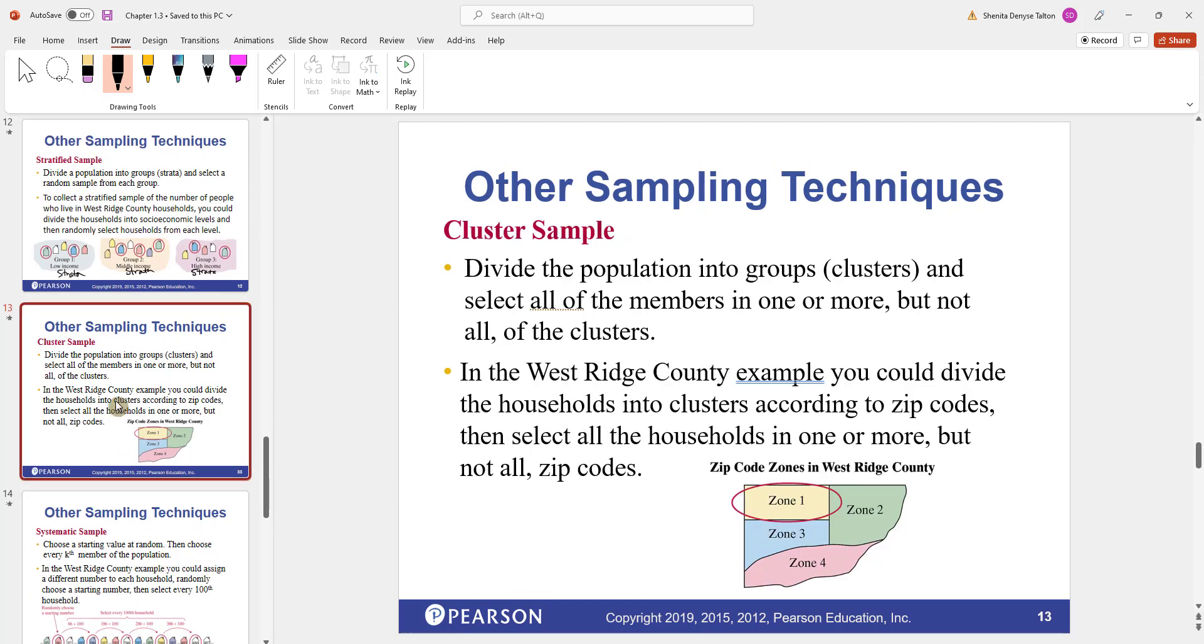A lot of students get stratified sampling confused with cluster sampling. With cluster sampling, you divide the population into groups or clusters. And you select all the members in one or more, but not all of the clusters. Going back to our West Ridge County example, you can divide the households into clusters according to zip codes. You know like a state, they all have different zip codes. And then you select all of the households within that zip code. Here's zone one. These all have the same zip codes. Same thing for zone two, zone three, and zone four. So I can randomly pick a zip code and interview everybody in zone one.